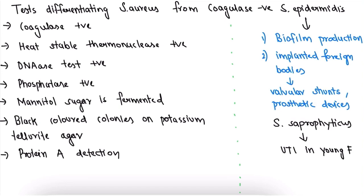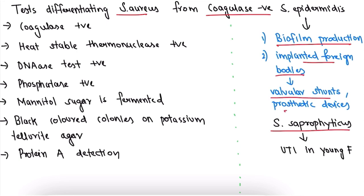Tests differentiating Staph. aureus from coagulase-negative organisms like Staph. epidermidis and Staph. saprophyticus: the key point about Staph. epidermidis is biofilm production — it is found on implanted foreign bodies like valvular shunts and prosthetic devices. Staph. saprophyticus causes UTI in young females.